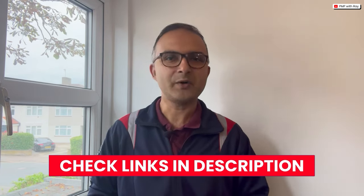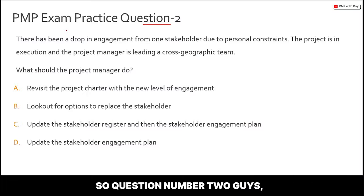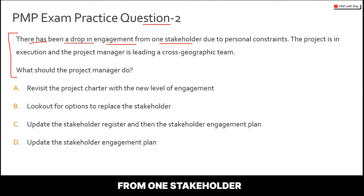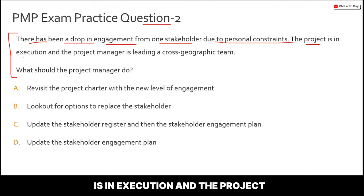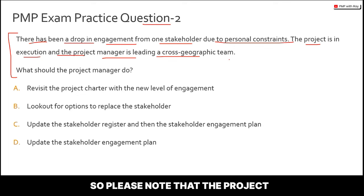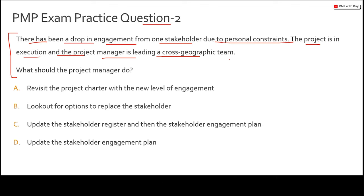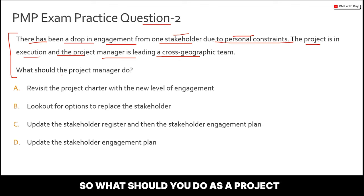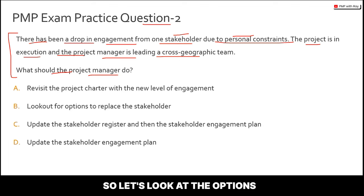Question two: There has been a drop in engagement from one stakeholder due to personal constraints. The project is in execution and the project manager is leading a cross-geographic team. You are seeing a drop in engagement from one of your stakeholders — the project has already moved from planning to execution. What should you do as the project manager? Let's look at the options one by one.